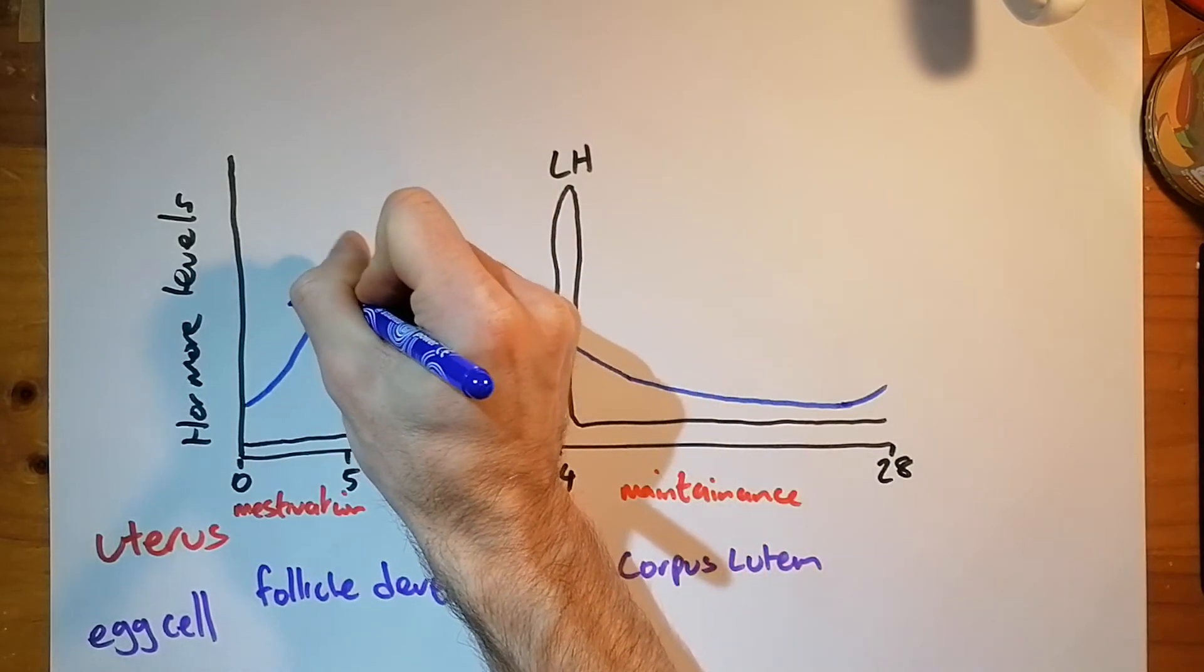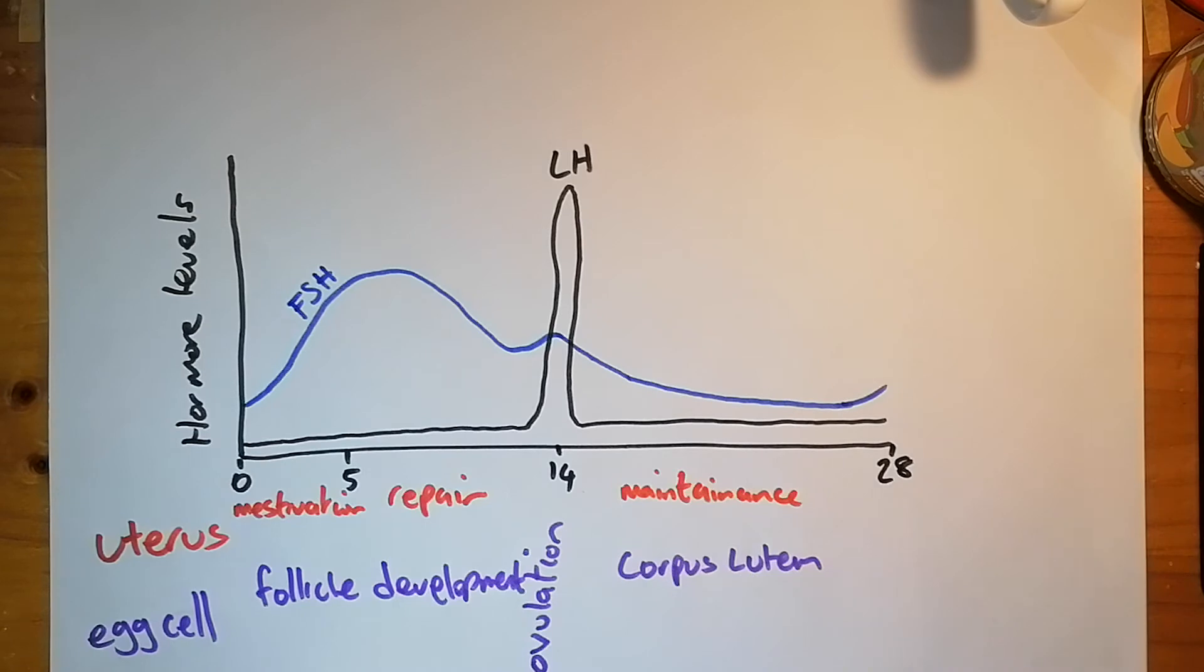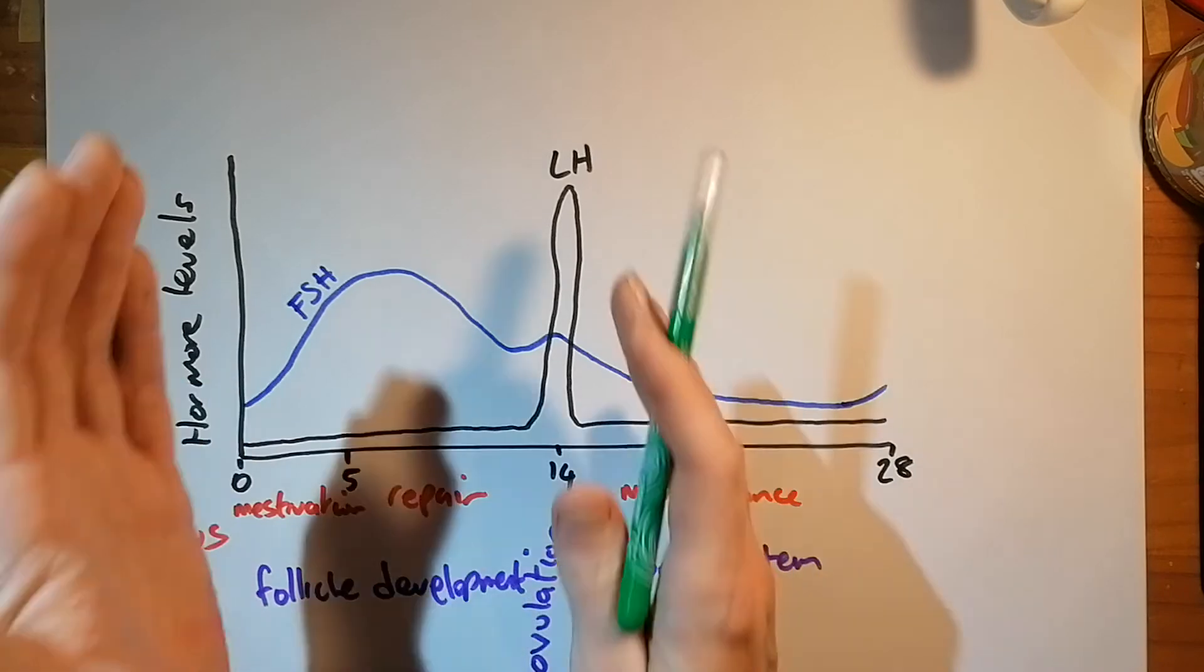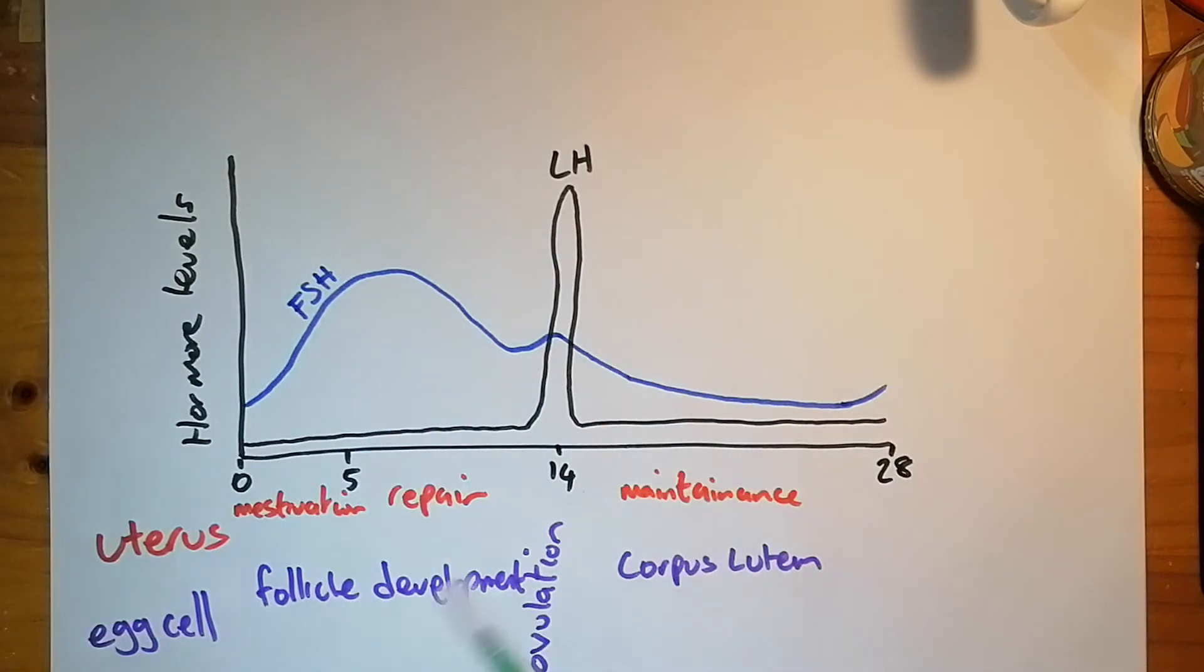And that's what happens to follicle stimulating hormone. So we'll put FSH here. Follicle stimulating hormone, our blue line. Then you've got those two hormones. They control what is happening to the egg cell. And then the hormones that control the uterus.